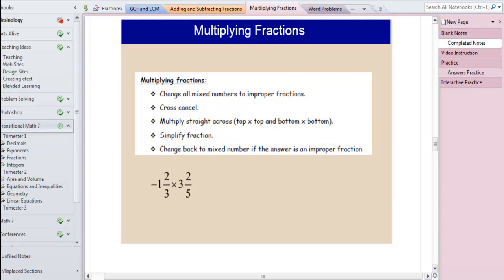Go ahead and try this next problem and then see how you did. So you should have changed negative 1 and 2 thirds into an improper fraction of negative 5 thirds and changed 3 and 2 fifths into an improper fraction of 17 fifths. Cross-canceling the 5s. That's all the cross-canceling you can do. And then multiply the numerators and the denominators. You end up with negative 17 thirds. And simplify this equals negative 5 and 2 thirds.